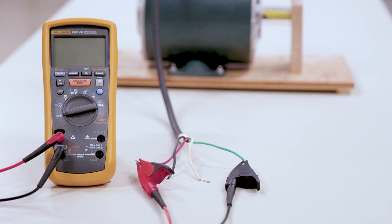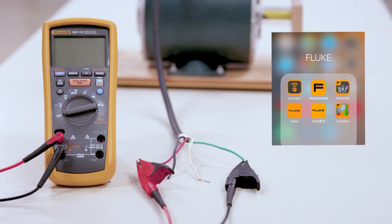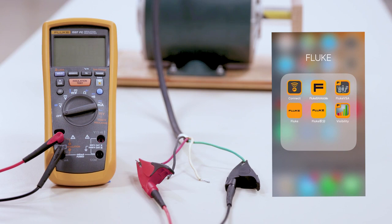Before we do that, we want to get into our Fluke Connect app so we can save the measurements we're doing for later purposes. You'll want to download the Fluke Connect app either through the Google store or through your app store. As you can see, I've already downloaded the app and I'm going to get into the Fluke Connect app.